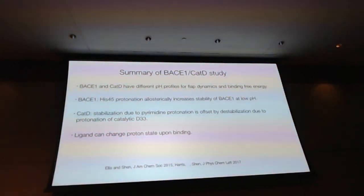So this is a little summary for the BACE1 cathepsin D study. So in the context of this meeting, we have learned that the two proteins, even though they are structurally very similar, they have identical binding modes, they have different pH profiles for the flap dynamics and binding free energy. For BACE1, the histidine 45 protonation really allosterically perturbs the stability of the binding at low pH. And for cathepsin D, even though we see very large contributions, those contributions offset each other and resulting in the flat pH profile, what we also learned that the ligand can change its protonation state. I showed you there's a one-unit pKa change.